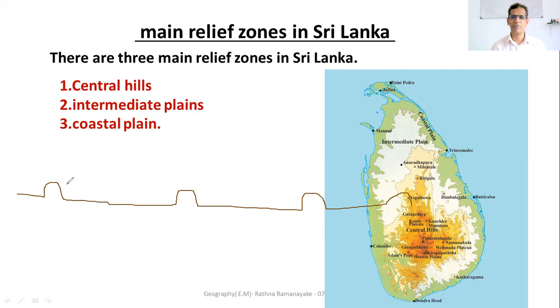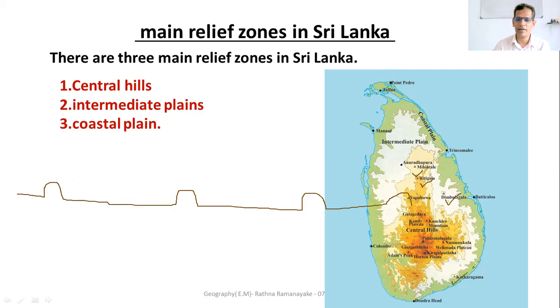Give examples for residual hills: Sigiriya, Mihintale, Dambulla, Kurunegala, Katharagama. These are examples of residual hills.